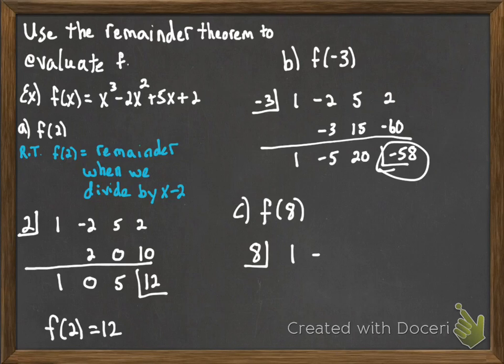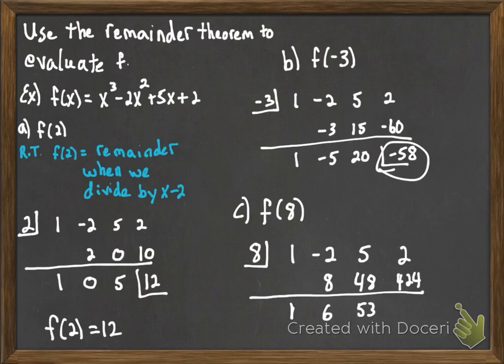Let's see if you get the same answer. Again, the 1 comes down. 8 and 1 is 8. -2 and 8 is 6. 8 and 6 is 48. 5 and 48 is 53. 8 and 53 is 424. 2 and 424 gives us 426. So this is using the remainder theorem and synthetic division to evaluate polynomials.